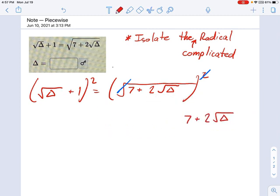It's going to be a little more lengthy. Think about what this means. This means square root of delta plus 1 times the square root of delta plus 1. And that means you have to do foiling. First, outer, inner, last. Remember that from polynomials?